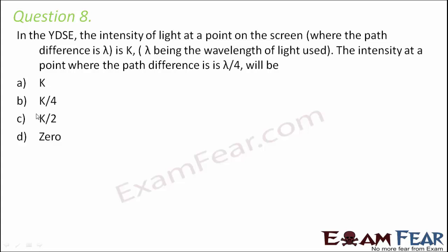As the path difference changes, the phase difference changes, and as the phase difference changes, the intensity changes. So first, let's talk about the path difference and phase difference. We know that for a path difference of lambda, it means a full cycle, so the phase difference is 2π.